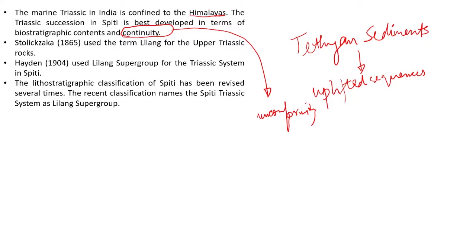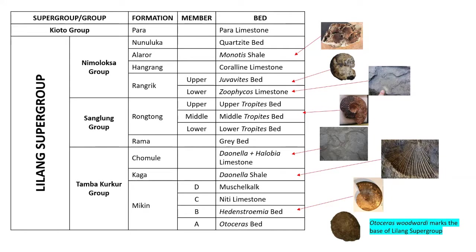The Triassic system of the Spiti Valley has been named the Lilang Supergroup. Earlier, Stoličzka used the term 'Lilang' for only upper Triassic rocks, but later Hayden used Lilang Supergroup for the entire Triassic system in Spiti. In some books you may find it spelled 'Lalung' (L-A-L-U-N-G), but the standard name is Lilang Supergroup. It is further divided into three groups: Tamba Kurkur, Sanglung, and Nimoloksa, with the Kioto group at the top.